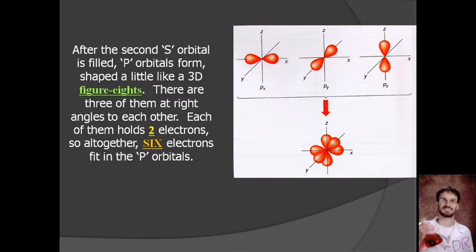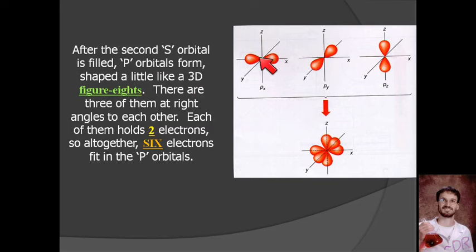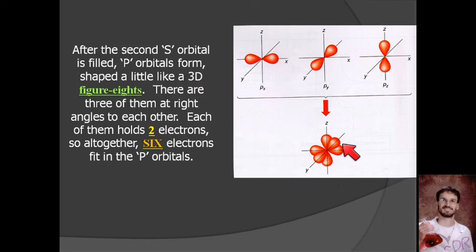The second kind of orbital is called the P orbital. P orbitals are shaped like peanuts, or figure-8s, and there are three of them in 90-degree orientations to each other. So you have one along the x-axis, one going in and out of the screen, and one going up and down — three different directions. These are the P orbitals, and each of them can also hold two electrons, just like the S orbitals.